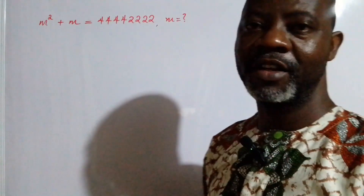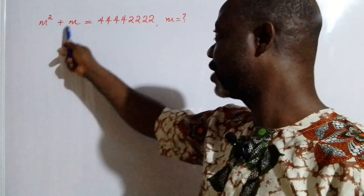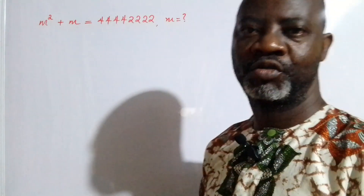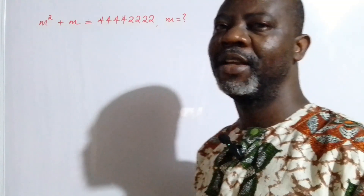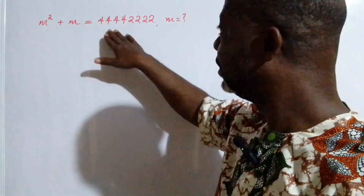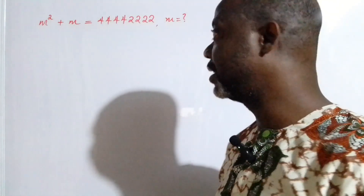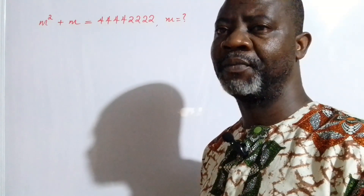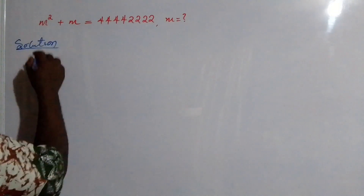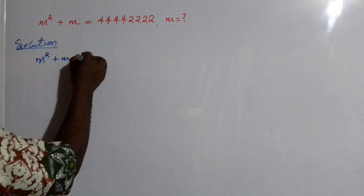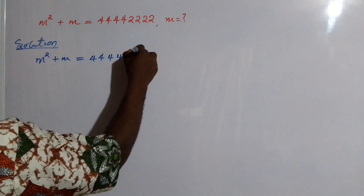Hello guys, welcome back to another video on my channel. Today we have an unusual question, and it is unusual by reason of this weird-looking number. We have m squared plus m equal to 44,444,222. We have to find the value of m. From the look of things, this number is actually the major issue, and that is why the problem is very interesting. It's an olympiad-type question, so let's get started.